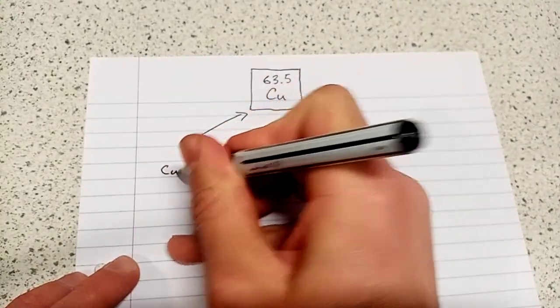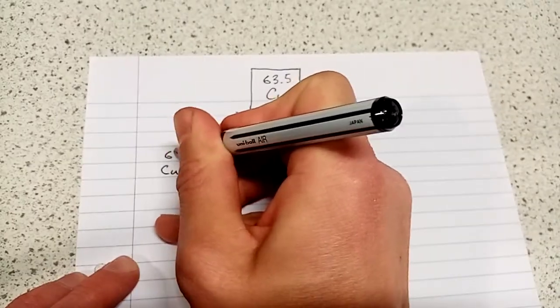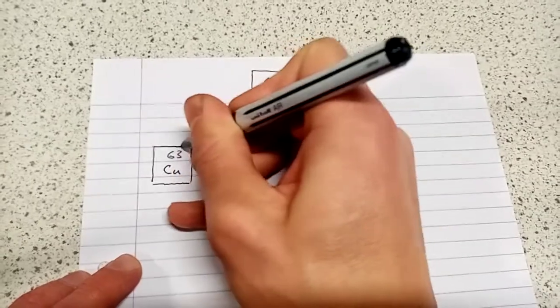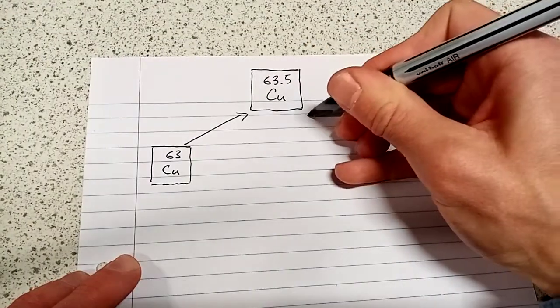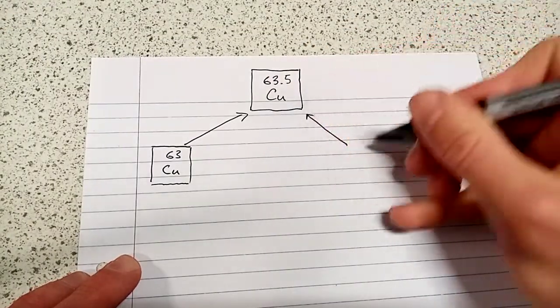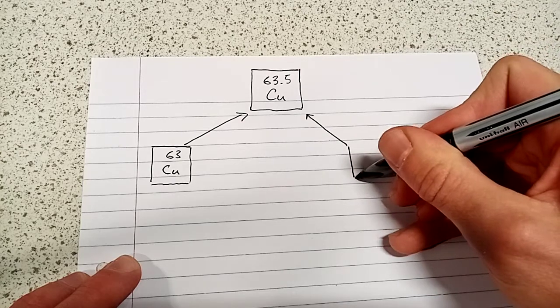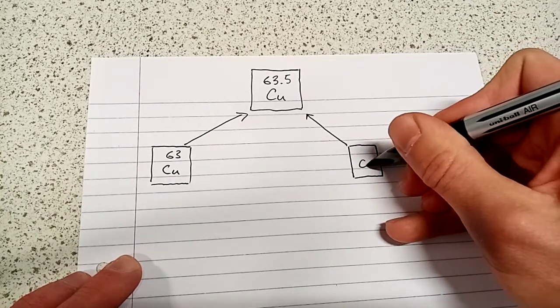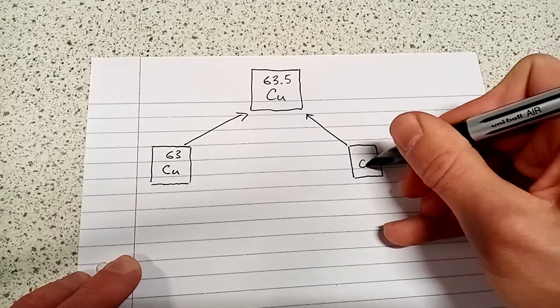One of them is copper 63, and the other one is copper 65. Now at this point it's worth reminding ourselves what is the definition of an isotope.